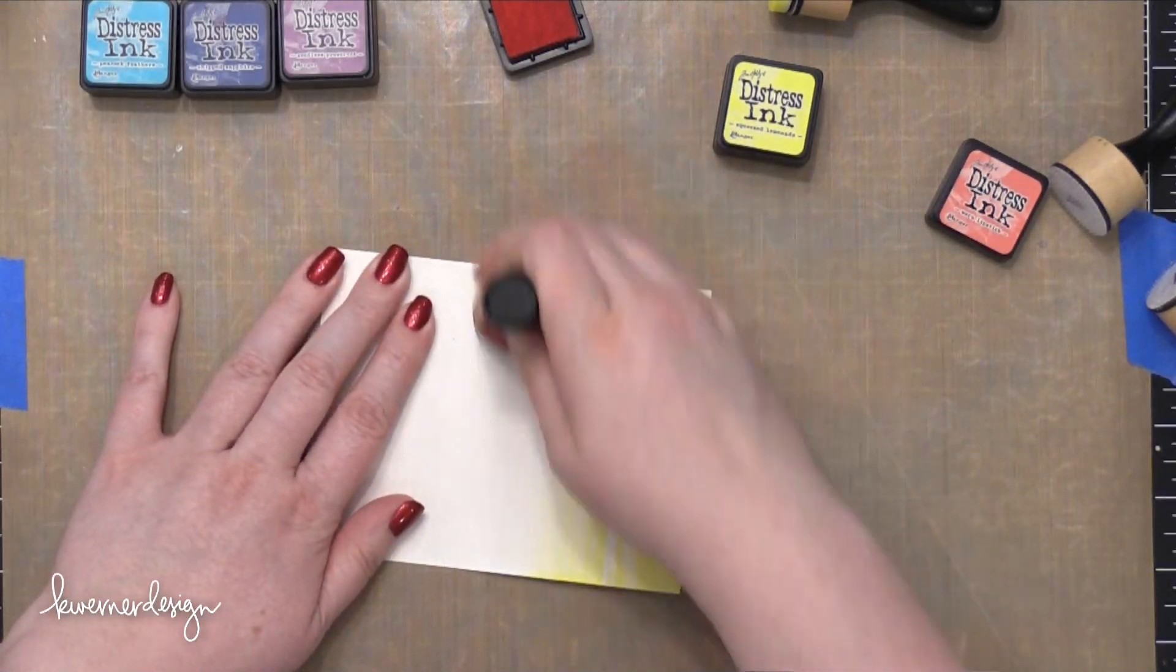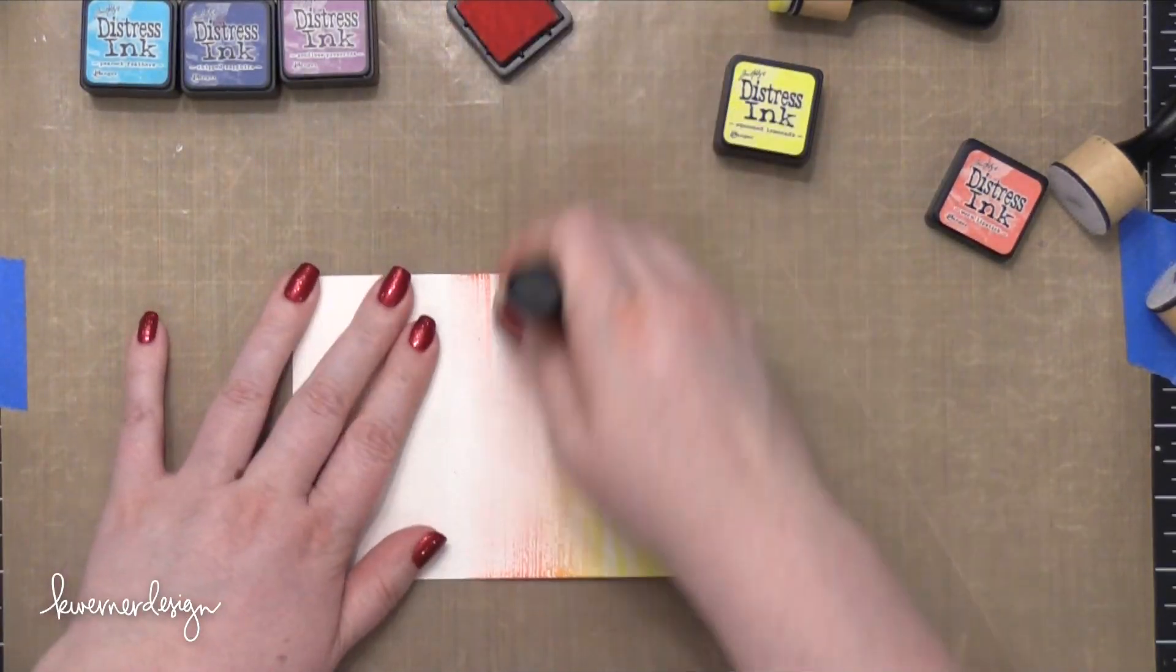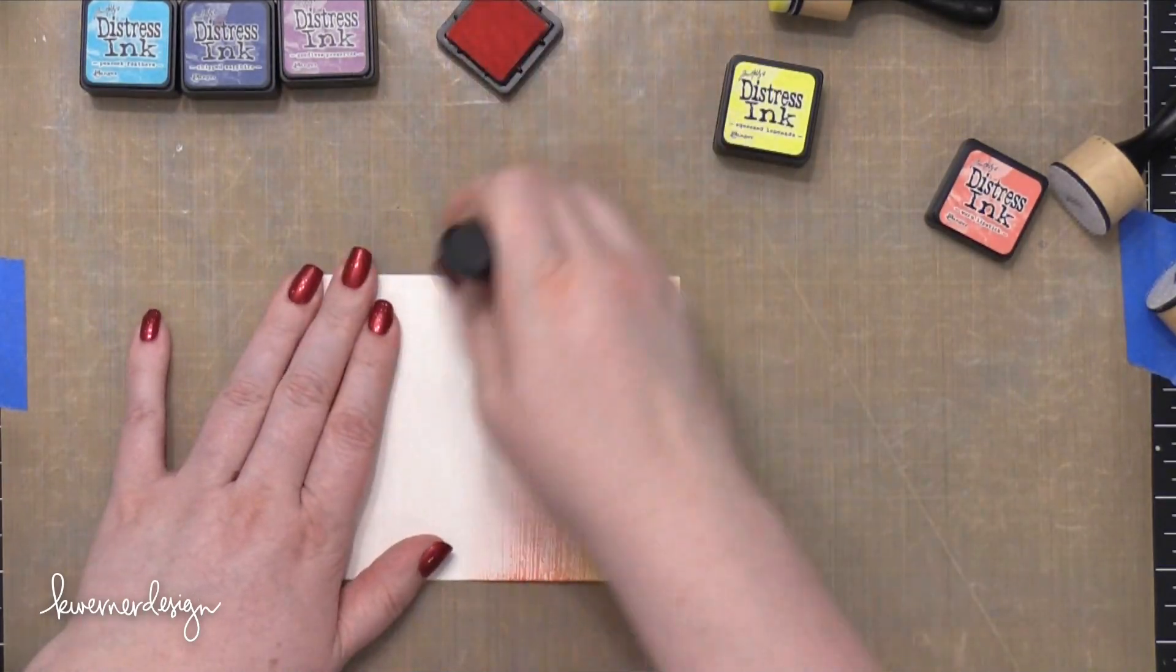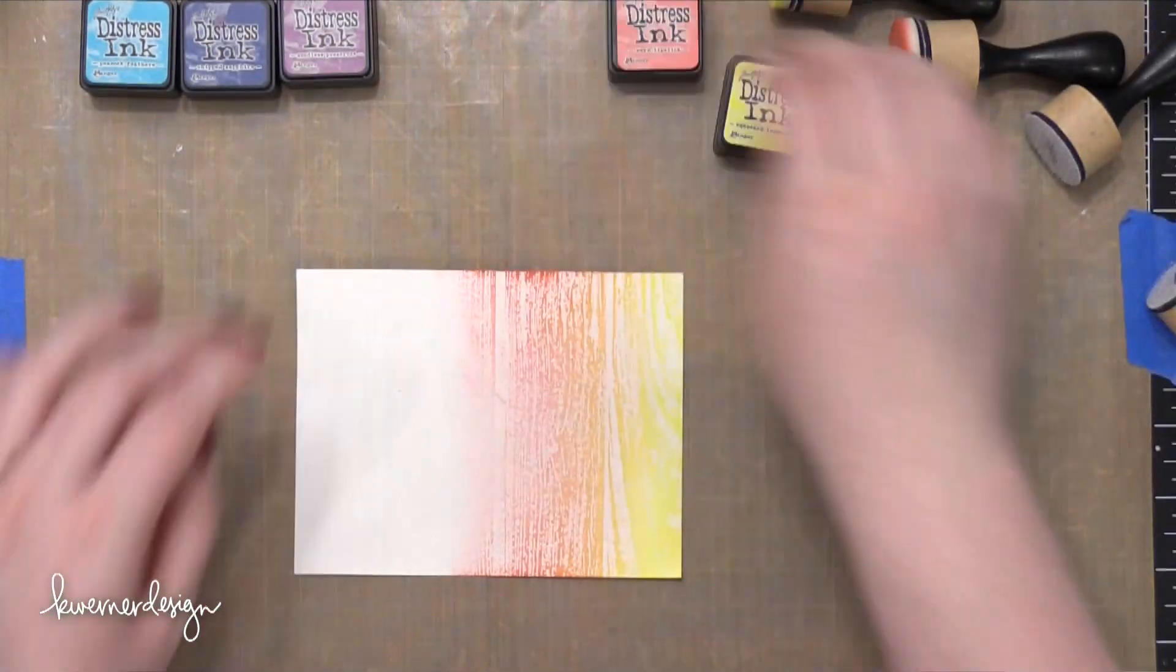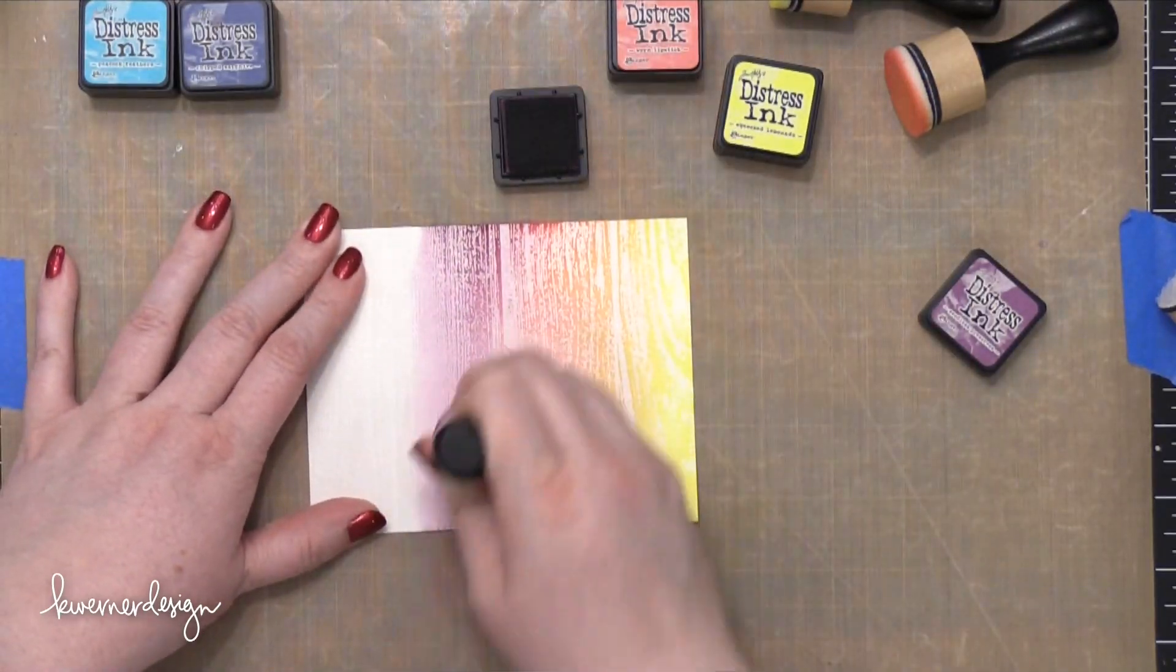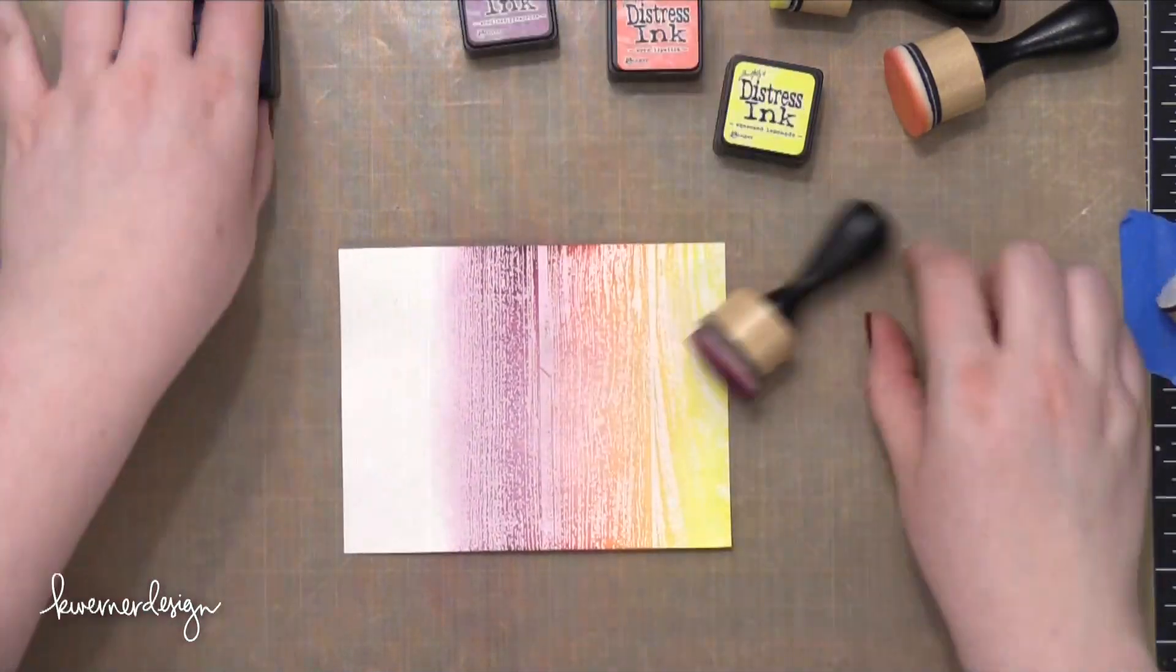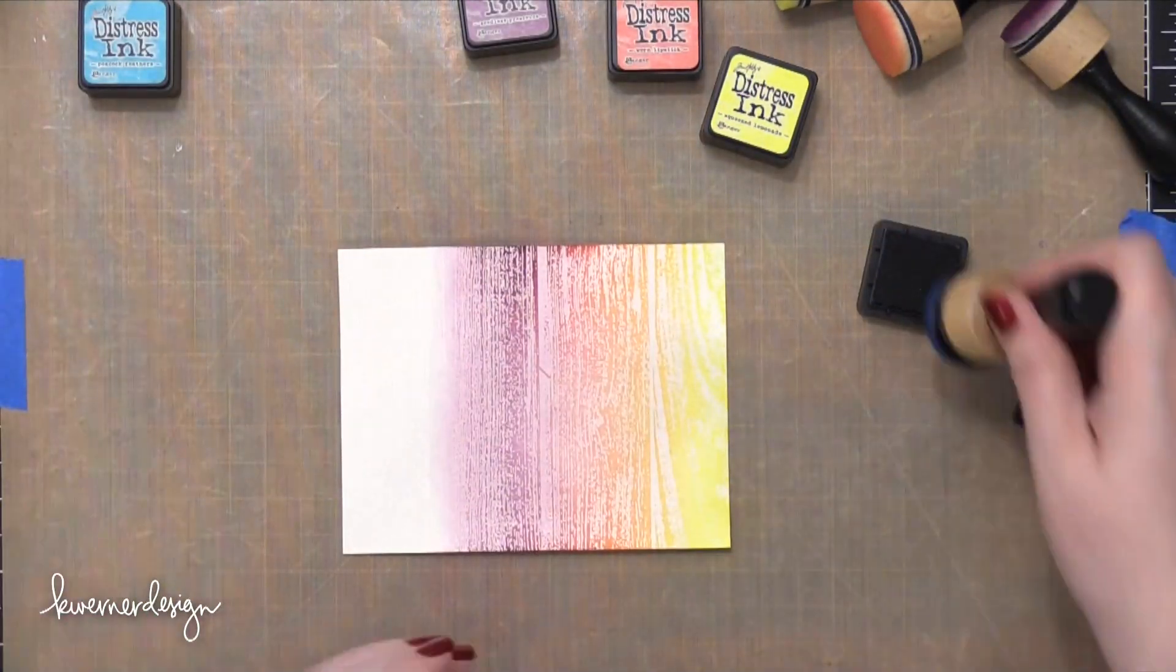First I used Squeezed Lemonade Distress Ink and now I'm using some Worn Lipstick. These colors blend beautifully. Then I'm going to switch colors and move on to Seedless Preserves and this is going to give a nice intense purple shade. Seedless Preserves has a lot of red in it so it blends into red tones really well.